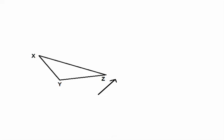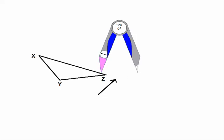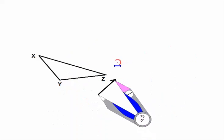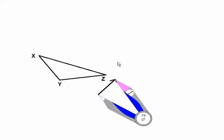The first thing we're going to do is take our compass and put the point of our compass at the endpoint of our ray or arrow. Then we're going to put the tip of the pencil at the tip of the arrow.